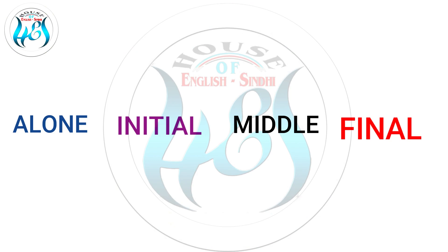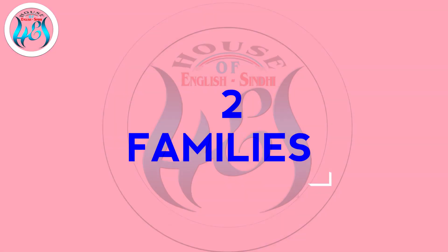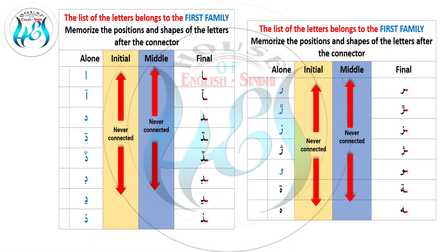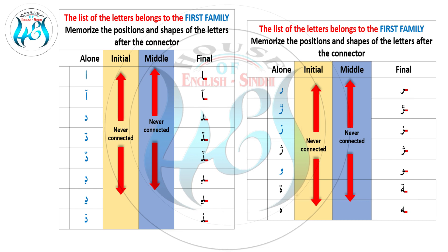The letters of the alphabet are divided into two families. The first family takes the connector before and never takes the connector after the targeted letters. Here is the list of the first family letters. If you want to learn how the individual alphabet letters are pronounced, just watch our uploaded course — Sindhi Roman script. The link is in the description or open the playlist of our channel.